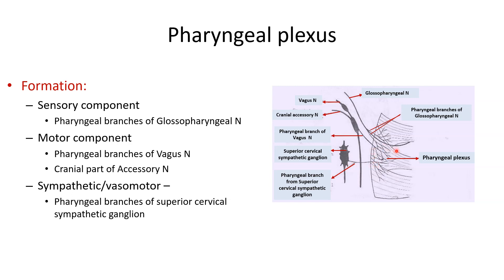You can see the plexus being formed on the middle constrictor muscle. The pharyngeal branches of the glossopharyngeal nerve, the vagus, the cranial accessory nerve joining the vagus, and the pharyngeal branch from the superior cervical sympathetic ganglion all converge in relation to the middle constrictor of the pharynx.